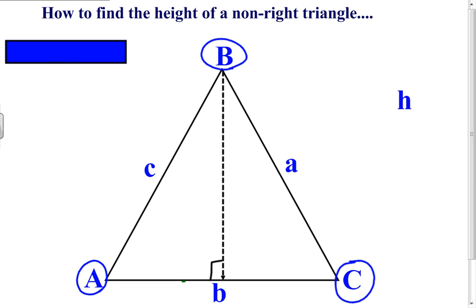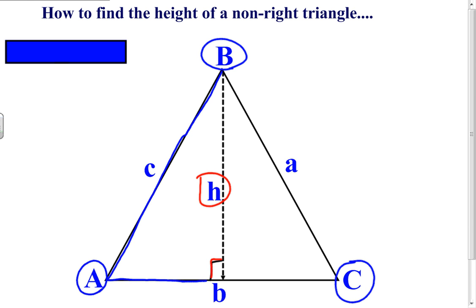We are drawing an altitude from angle B to the opposite side, which is little b. Whenever you draw an altitude, you are going to create a right angle. This is going to denote our height. When you draw an altitude, notice that what I have done is create a right triangle, actually on both sides.